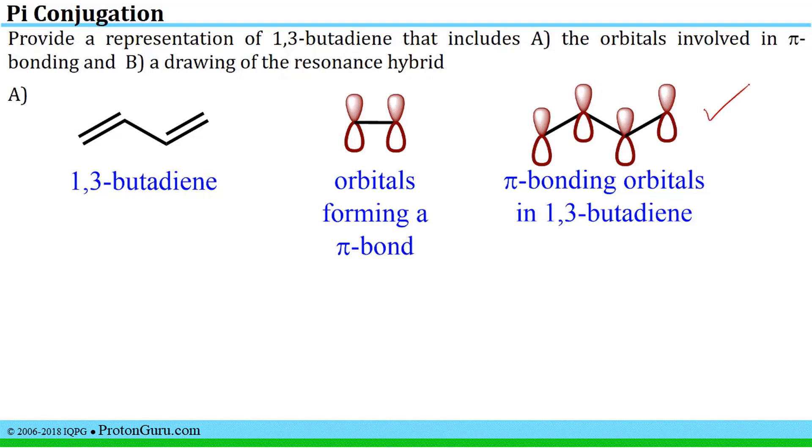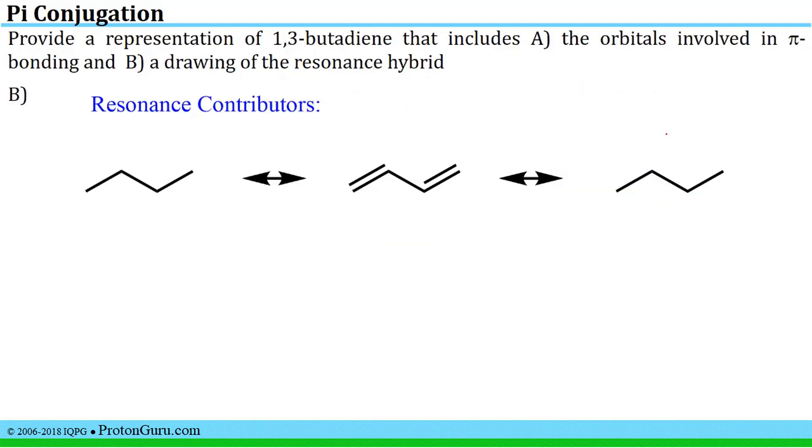This emphasizes how pi conjugation works. You have the ability to spread the electrons across this entire pi system in the molecule. Now let's look at part B of this problem where we are asked to draw a resonance hybrid structure for 1,3-butadiene. The first thing we have to do is start with the 1,3-butadiene itself and draw the resonance contributors so that from those contributors we can deduce what the hybrid would be.